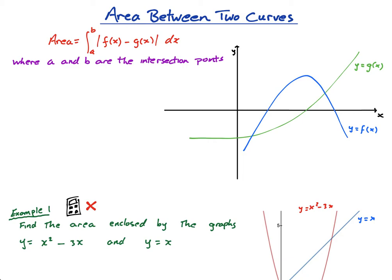First thing I want to show you is what the area between two curves means. If this is a curve f of x and this is a curve g of x, the area between the curves is this enclosed area — that orange area. So that's the area we're trying to find. Now I've deliberately put some of it below the x-axis and some of it above the x-axis.